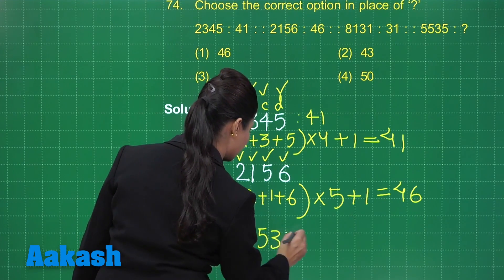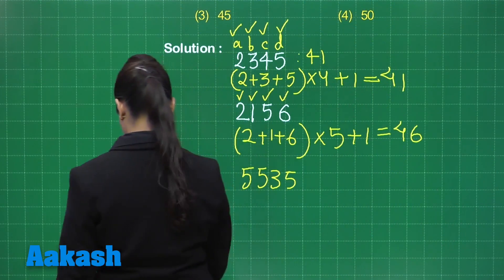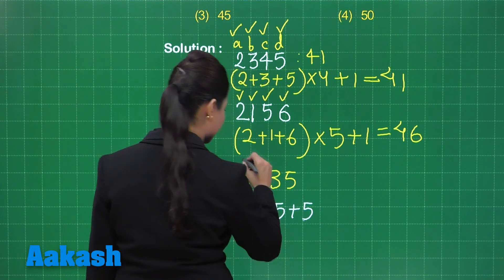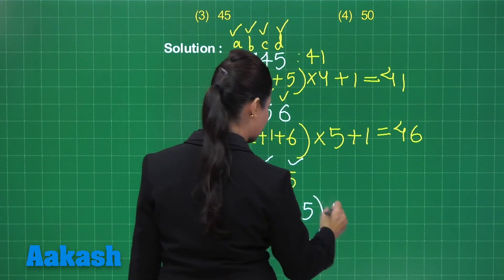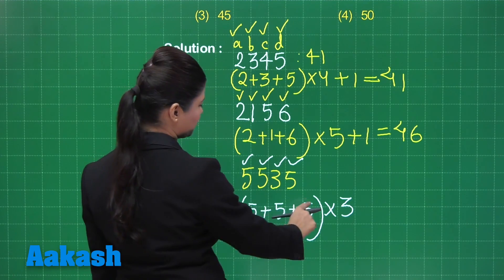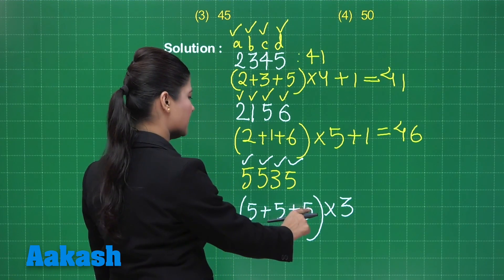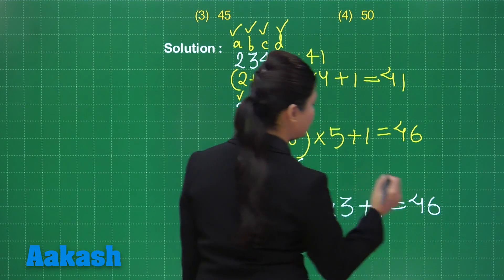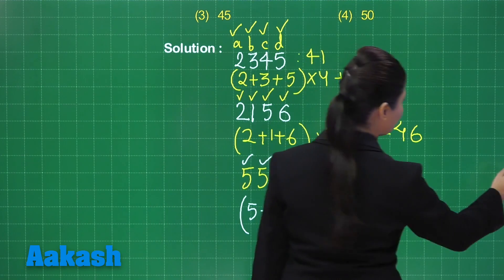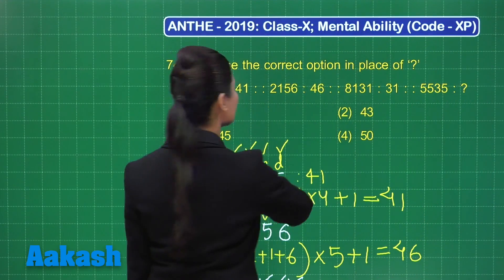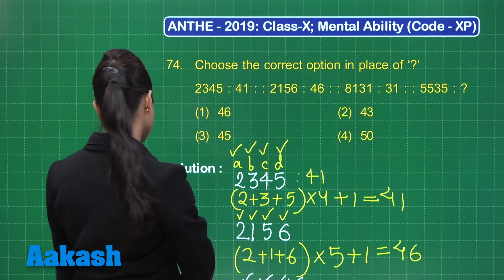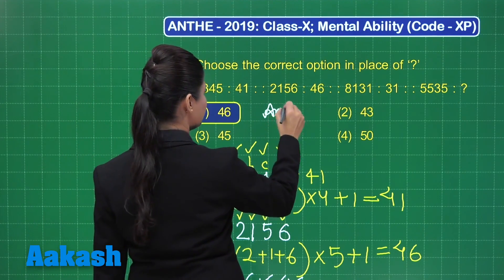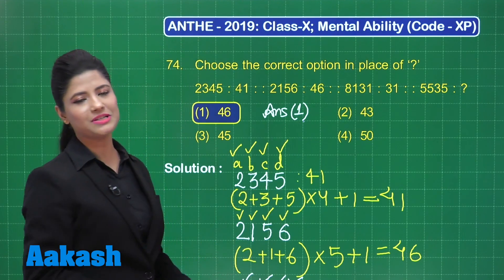Now let's consider the number 5535 and apply the same pattern. First, second, and fourth digits: 5 plus 5 plus 5 = 15. Multiply by the third digit which is 3: 15 into 3 = 45, plus 1 = 46. So the answer in place of the question mark is 46. Out of the options, 46 is option number 1, so mark the answer as option 1.